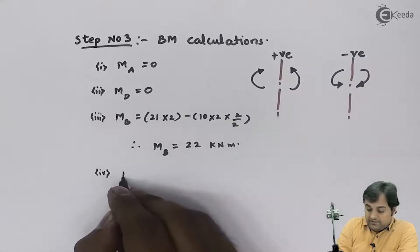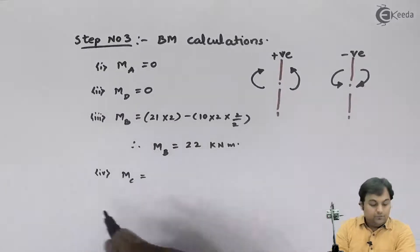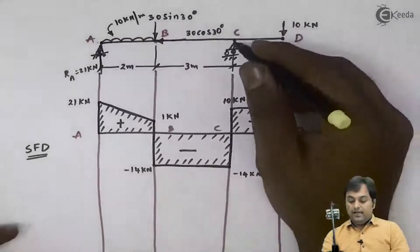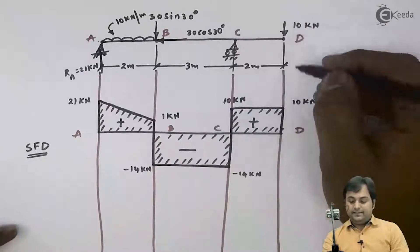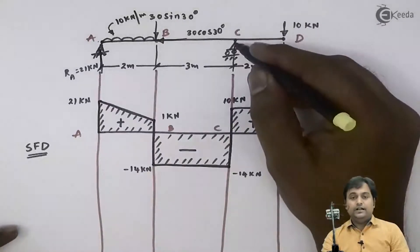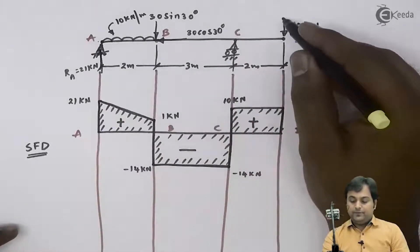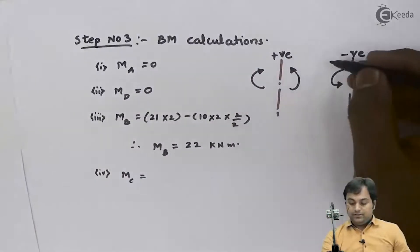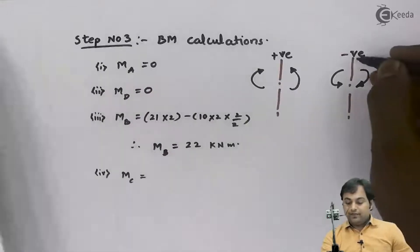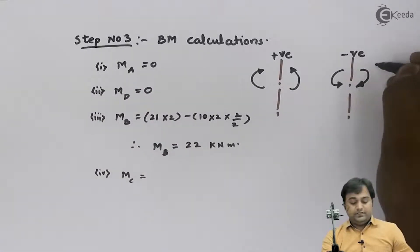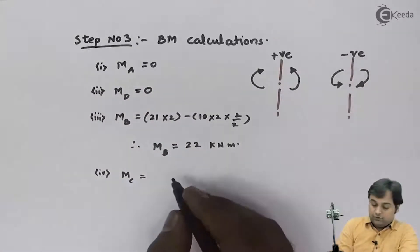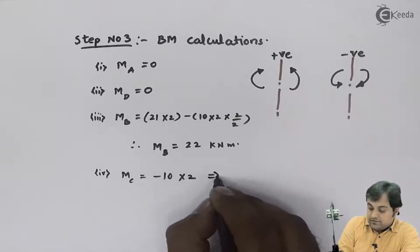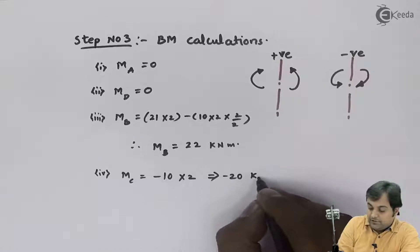The moment at C is calculated next. There is a 10 kN load acting to the right of C, producing a clockwise moment. Since it is clockwise to the right of the section, by sign convention it is negative. So moment at C equals minus 10 multiplied by 2, which is minus 20 kNm.